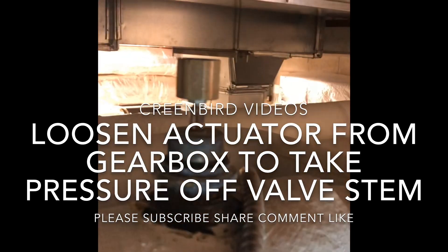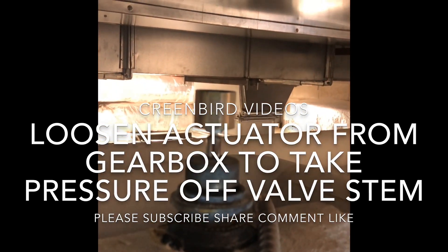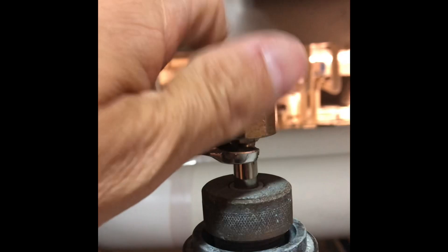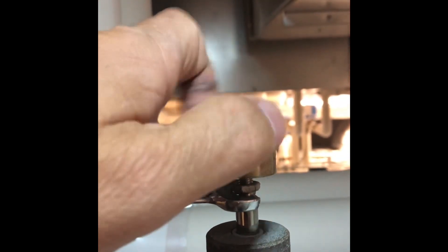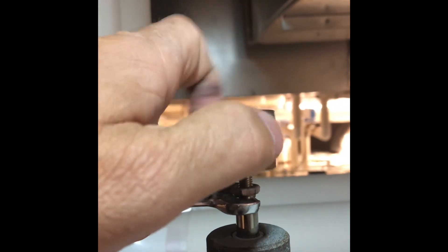Now we just have to remove that nut from the top of our globe valve. Now we'll take the top of this off. And our top of our valve will be ready for our new actuator.